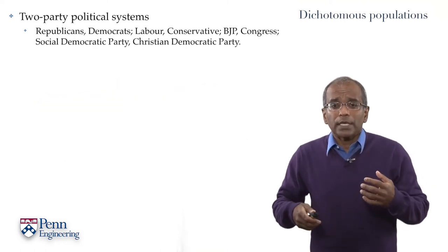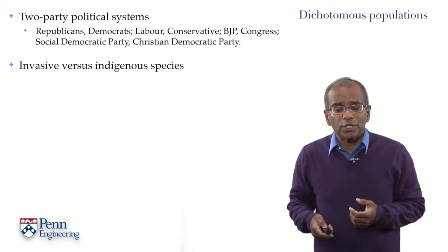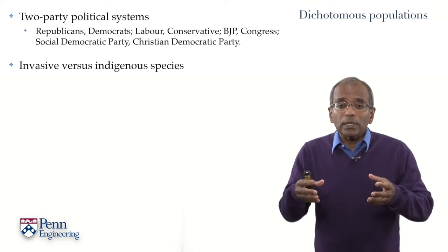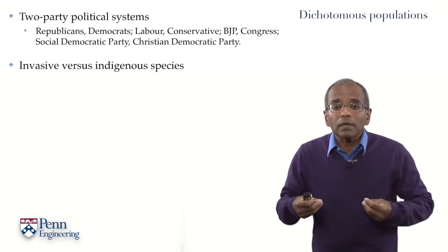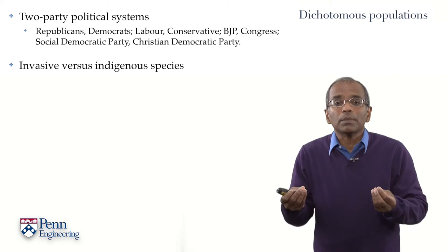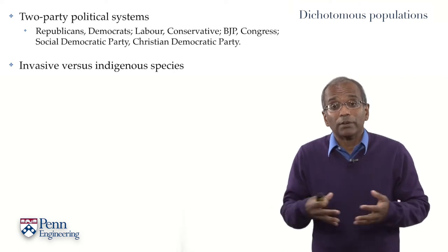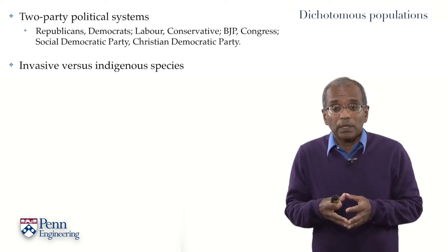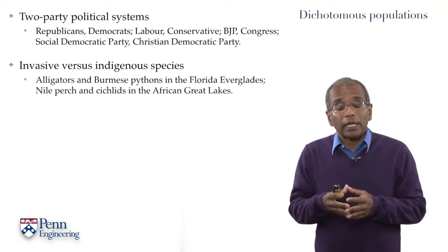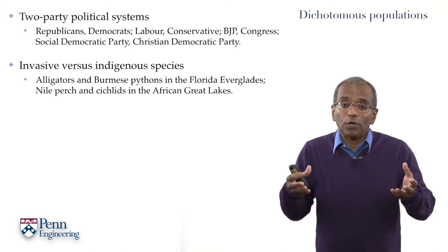There are other examples of settings where we have dichotomous populations. Here is another example from environmental science. A consequence of humans travelling faster around the world is that they carry indigenous species to far-off locales, which can have undesirable and sometimes very deleterious consequences to the local environment. Spectacular instances of this arise, for example, in the Florida Everglades, where the creature at the top of the pyramid is the Florida alligator.